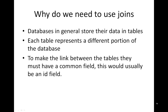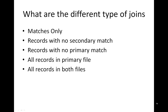When we bring the different tables into IDEA, each would be a separate IDEA database or file. With the join, we can associate the vendor information with each transaction. IDEA has five different types of joins: matches only, records with no secondary match, records with no primary match, all records in primary file, and all records in both files.